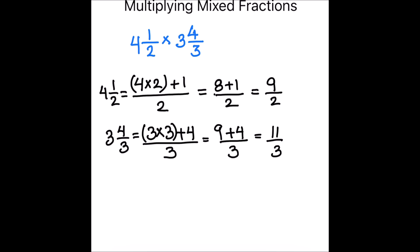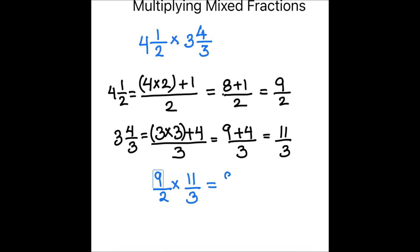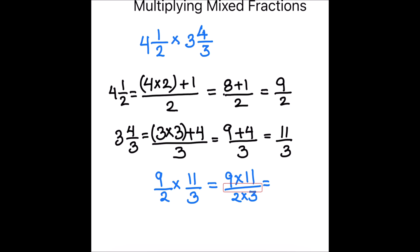Now we can multiply the two fractions. That's nine over two times eleven over three. For multiplying improper fractions, we multiply the numerator with the numerator and denominator with the denominator. So this is nine times eleven, which is ninety-nine, and two times three is six. So our answer is ninety-nine over six.